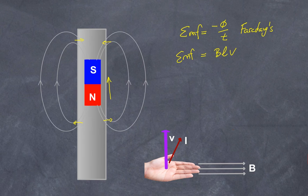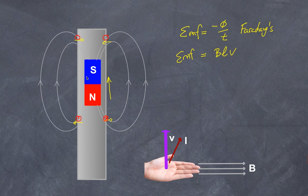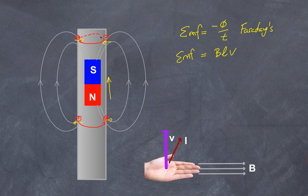Applying the left-hand rule: on the right side of the tube near the south pole where the field goes in and velocity is upward, the current goes into the page. On the left side, it goes out of the page. Similarly, up near the north pole, the current goes out of the page on one side and into the page on the other. So we end up with circular currents going in one direction above the magnet and the opposite direction below it.